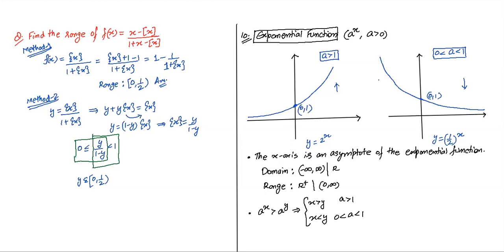Important note: e^x is a special exponential function, not the only one. Any positive base works: 2ˣ, 3ˣ, (1/2)ˣ, etc. Also, base A=1 is excluded because 1ˣ = 1 always — it becomes a constant function, not exponential. Some books include A=1 and some don't; for our purposes, A ≠ 1.